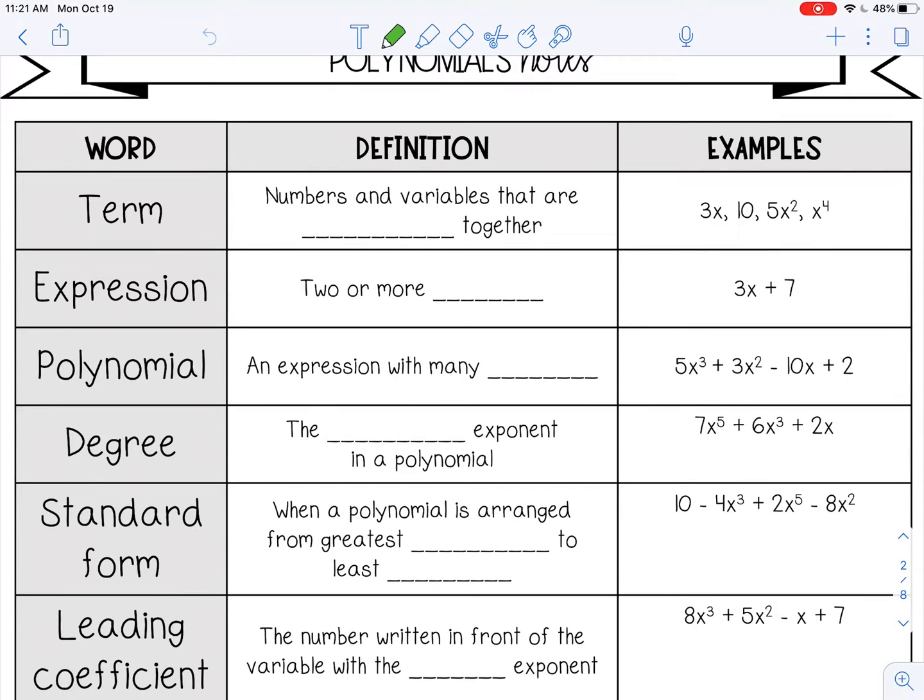So a term is numbers and variables that are multiplied together. So 3x, same thing as 3 times x, 10, 5x squared, x to the 4th power, all of those are terms.